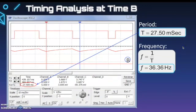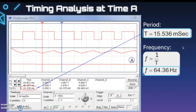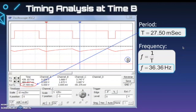Looking at time B, our period is 27.50 milliseconds and our frequency is 36.36 hertz. You can see what changed: the period obviously got longer and our frequency obviously got lower.